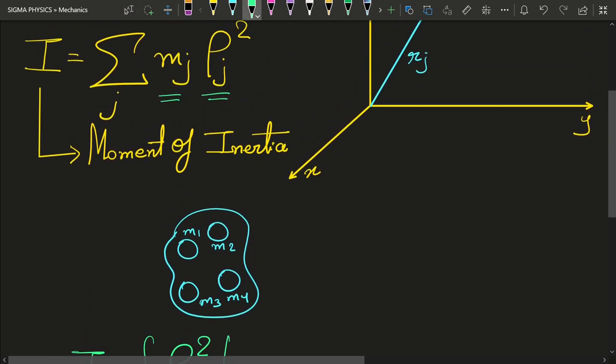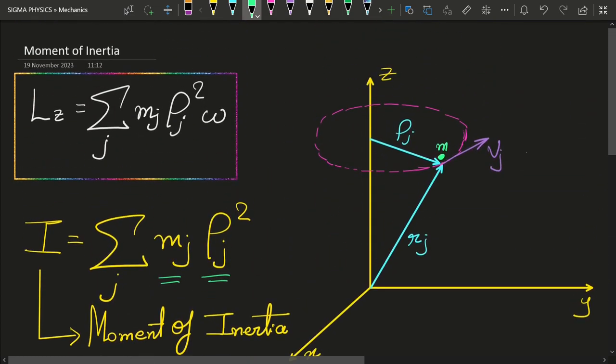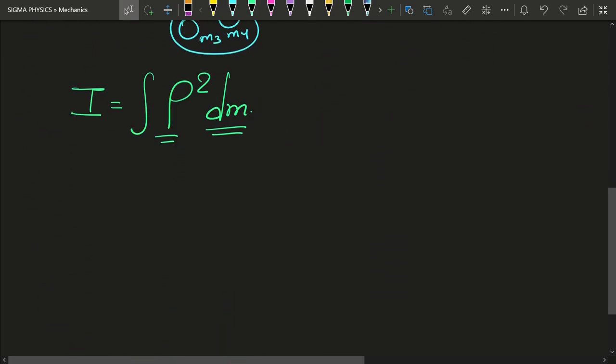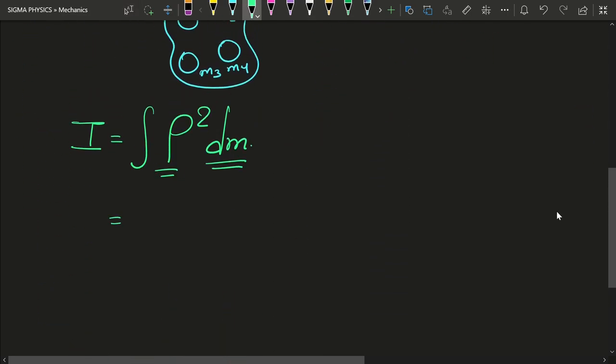Now as you can easily see from this diagram, rho j can be written as some value, let's say it has some value of y and it also has some component in the x direction. Then rho squared can be written as x squared plus y squared using the Pythagorean theorem, and dm, that is the elemental mass, can be written as...